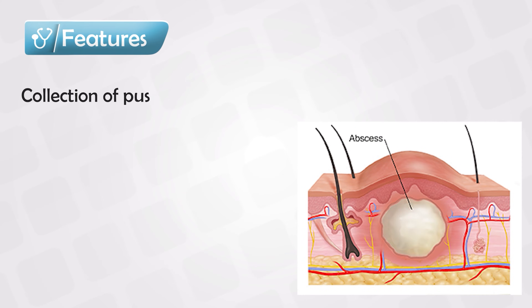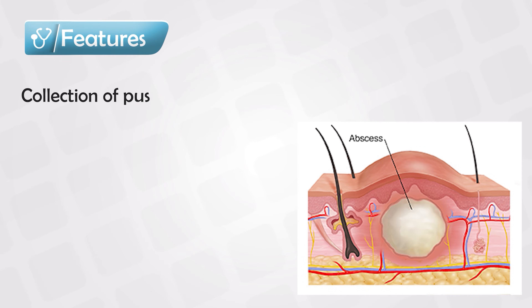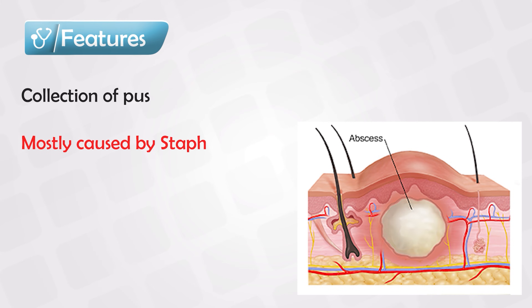Skin abscesses are a collection of pus beneath the skin. While this can be internal within the deep organs of the body, it's mostly in the skin. The causative organism is almost always Staphylococcus aureus.